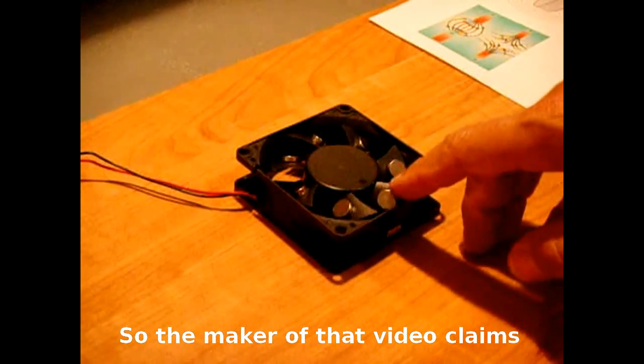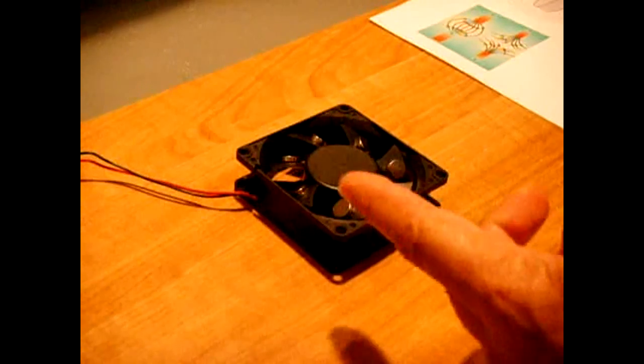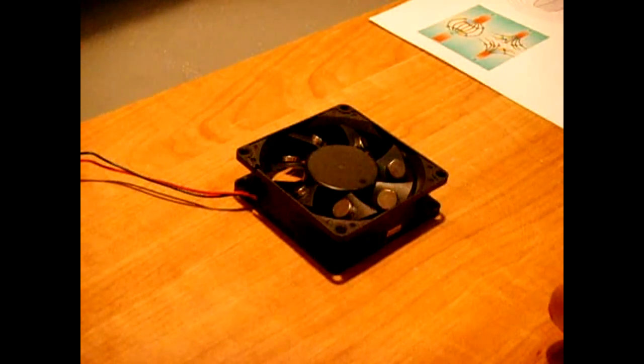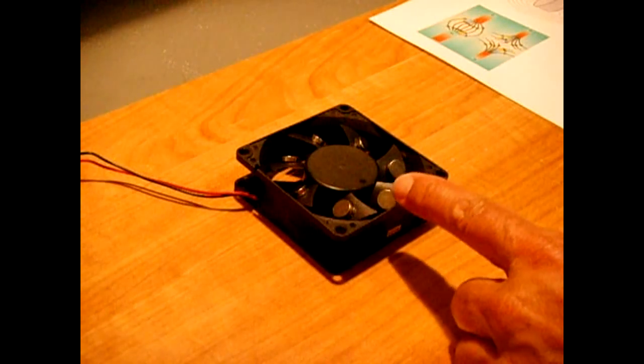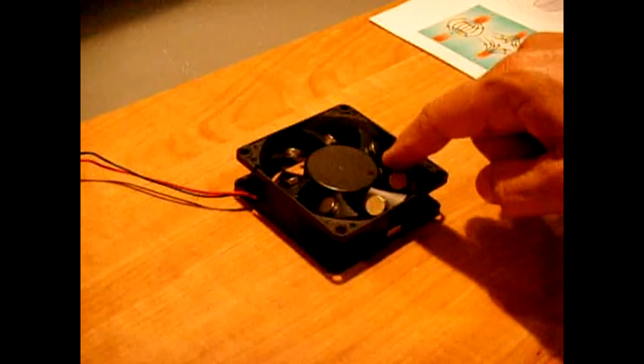Now because this is magnetic south and the magnet is also going to be magnetic south, they're the same so they're going to want to repel each other. So by bringing the magnet close to the fan blades, you would expect the magnet to push away, which it will.